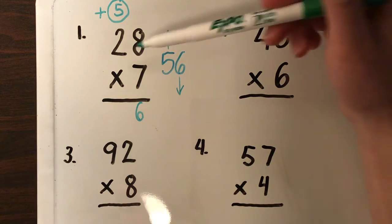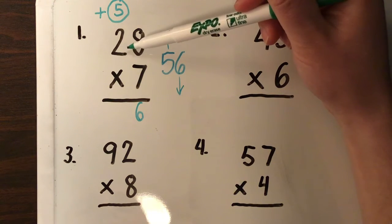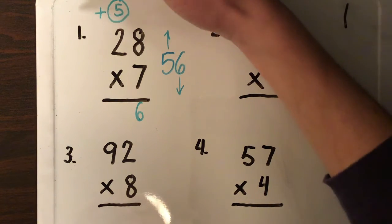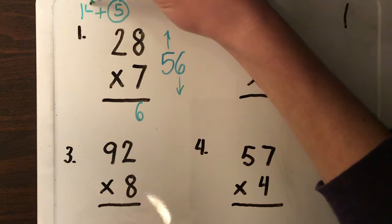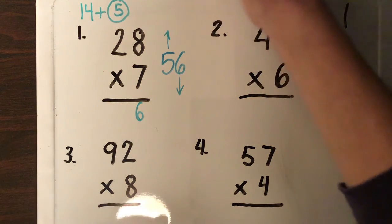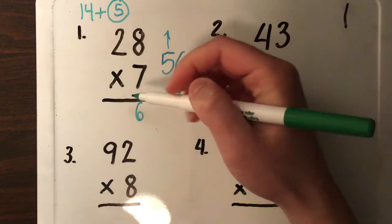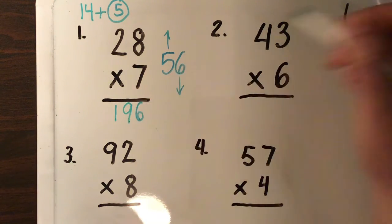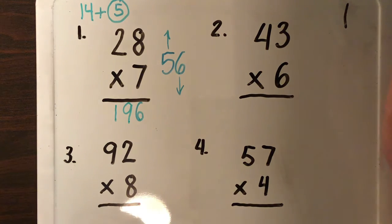Now I'm going to do my tens. Seven times two tens. Well, seven times two is 14. I'm going to put that 14 right here. 14 plus five is 19. So I just put that 19 right down here. My answer is 196.